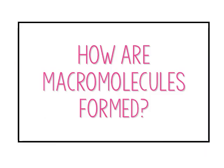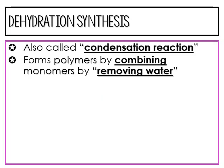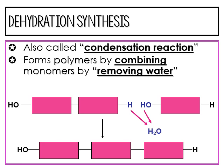The first question we have to ask ourselves is how are macromolecules formed? They're formed through what's called dehydration synthesis, also called a condensation reaction. Basically, these polymers are formed by combining monomers, and the way they do that is they end up removing water.